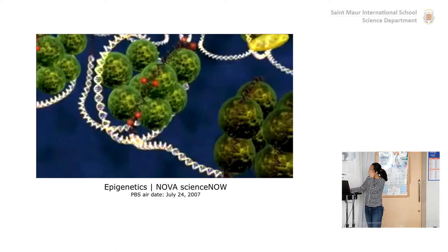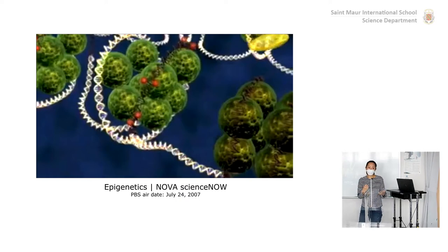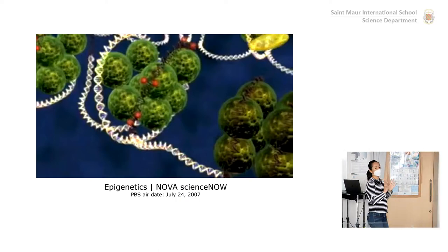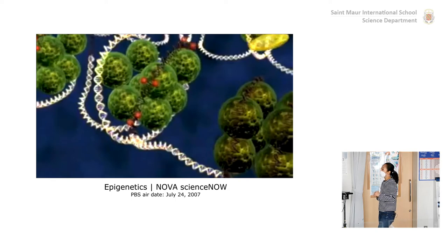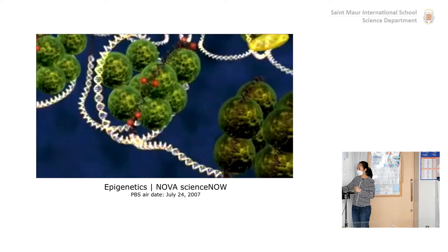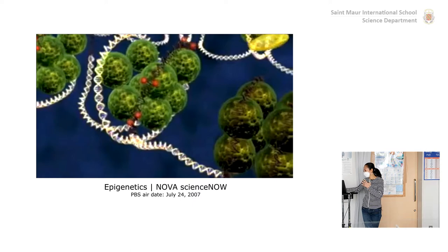Also DNA damage happens constantly — when you go outside, or from alcohol, smoking, pollutants — there are so many toxic things in the environment that can damage the DNA. Mutations are always happening, and cells are always trying to repair that DNA. There's so much happening in cells that we're not yet able to visualize it all in living cells — we don't have that technology yet.